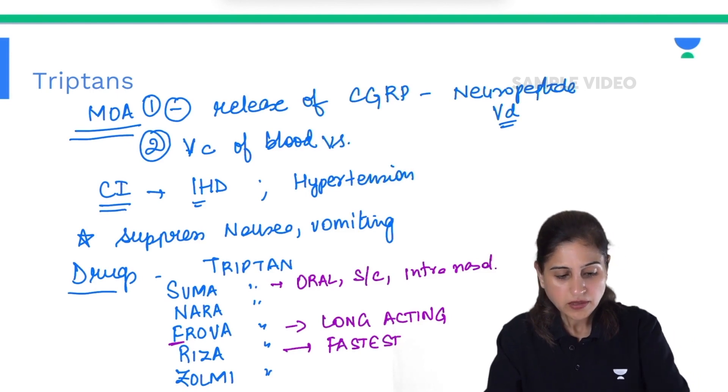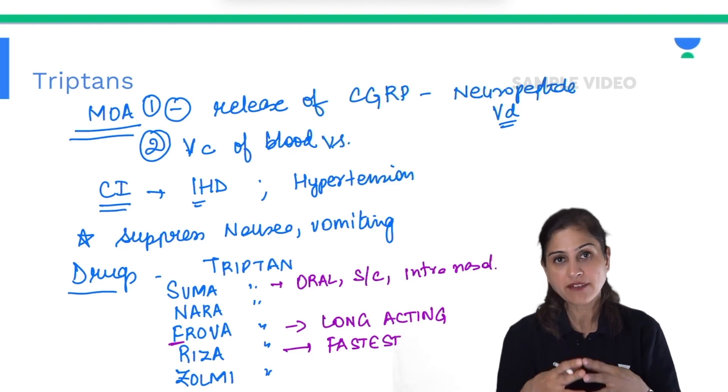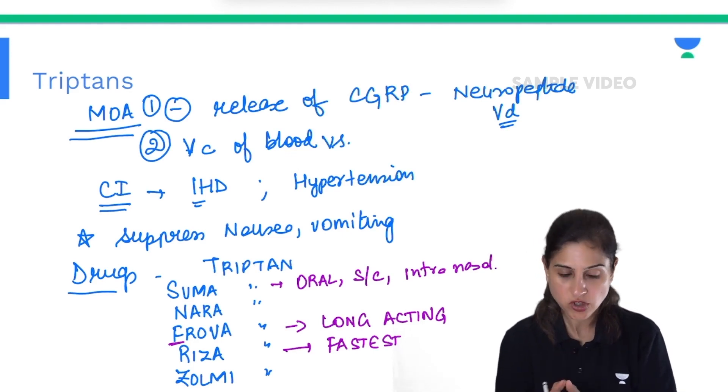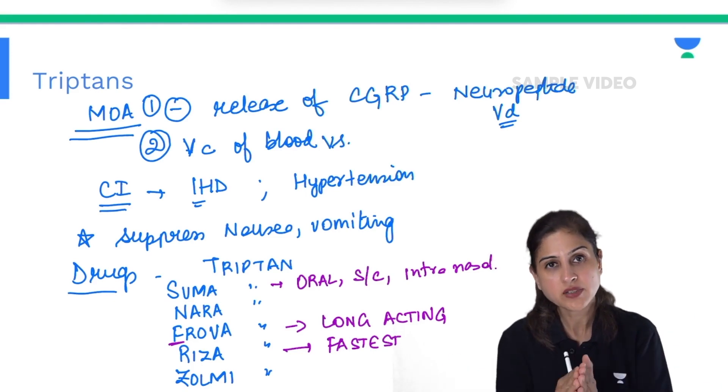Important thing to remember about these drugs is that they should not be given within 24 hours of giving ergot alkaloids. They have the same action as vasoconstriction, so we should never combine these two drugs together within 24 hours because then there will be dangerous vasoconstriction in the body.